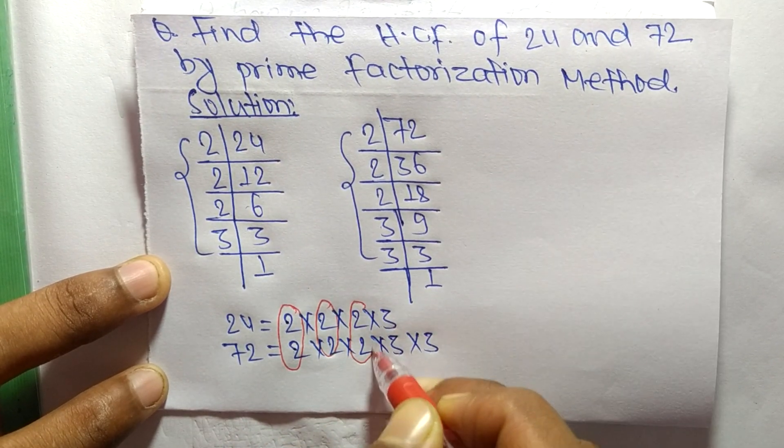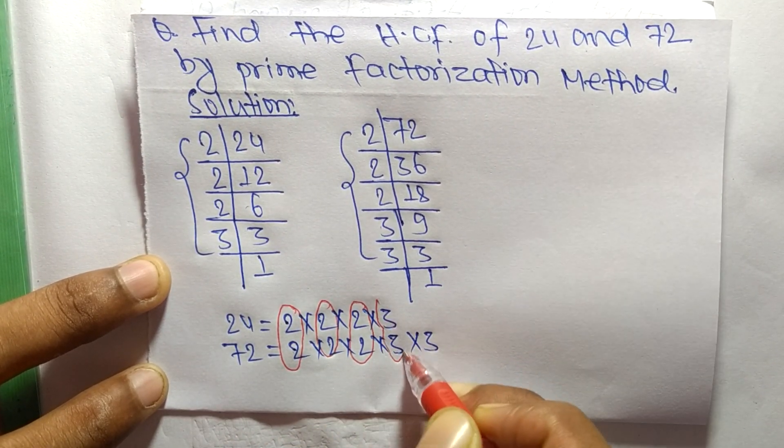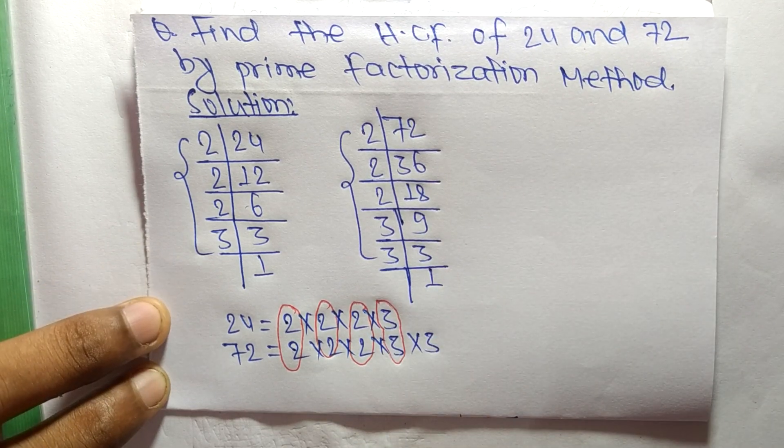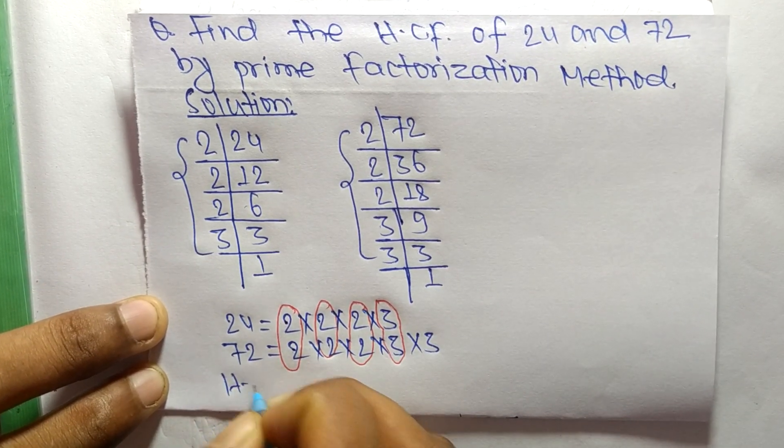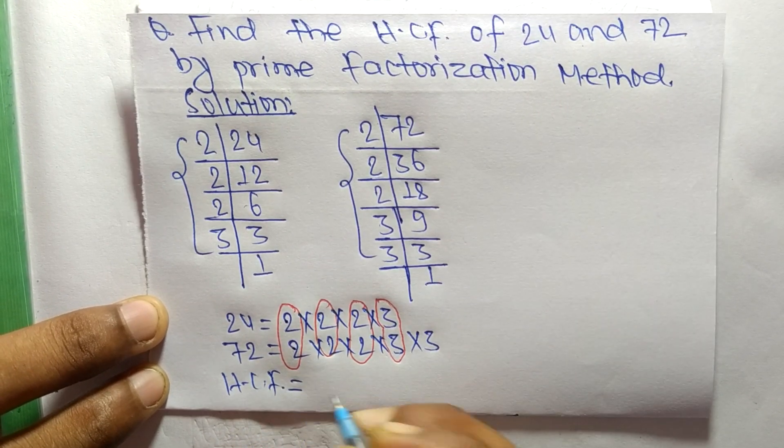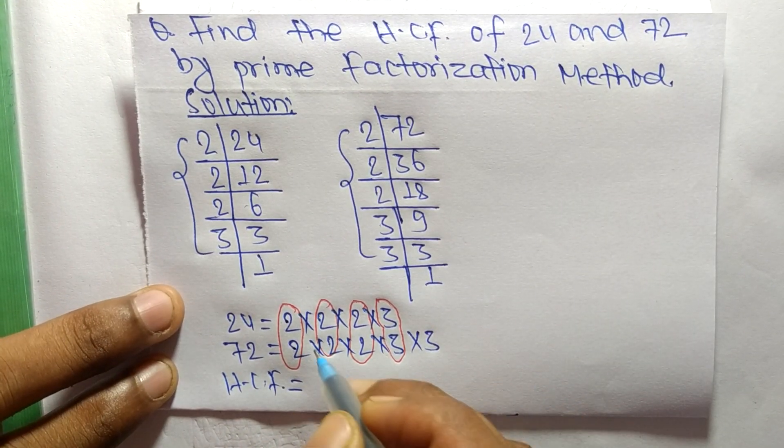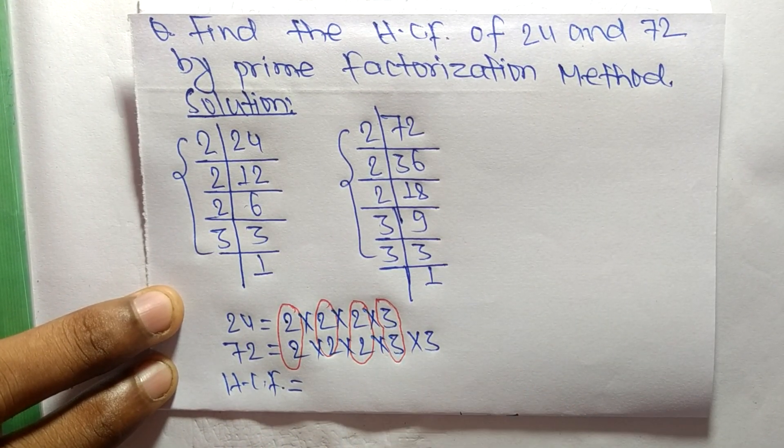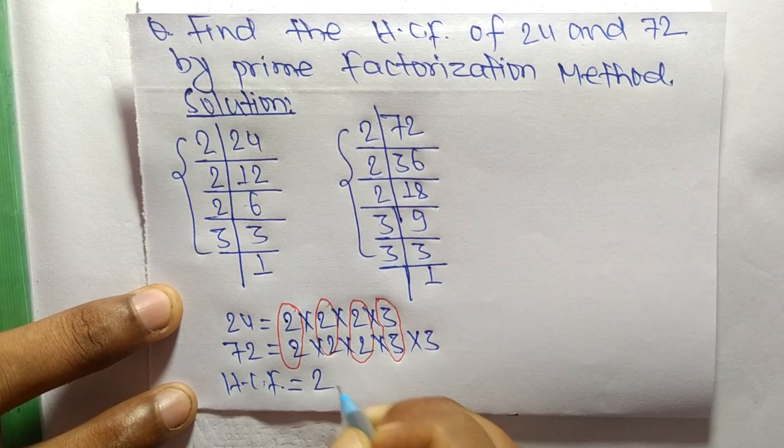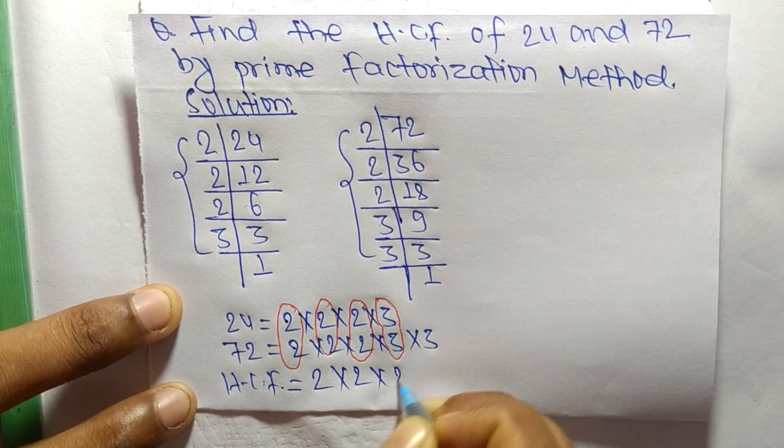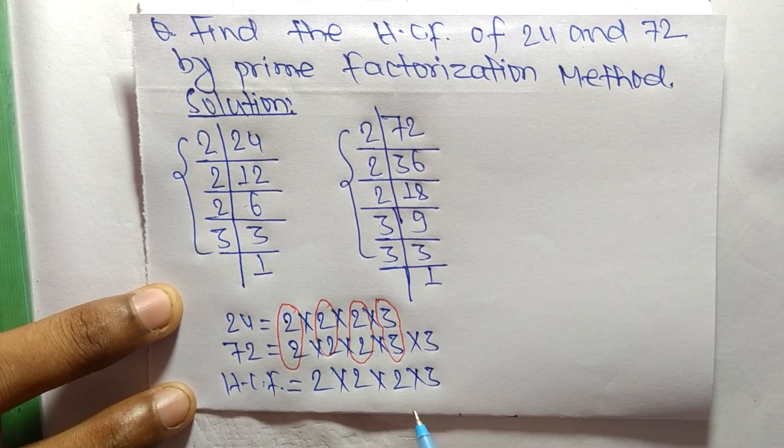The HCF equals the product of all these common factors: 2 times 2 times 2 times 3. So, 2 times 2 equals 4, 4 times 2 equals 8, and 8 times 3 equals 24.